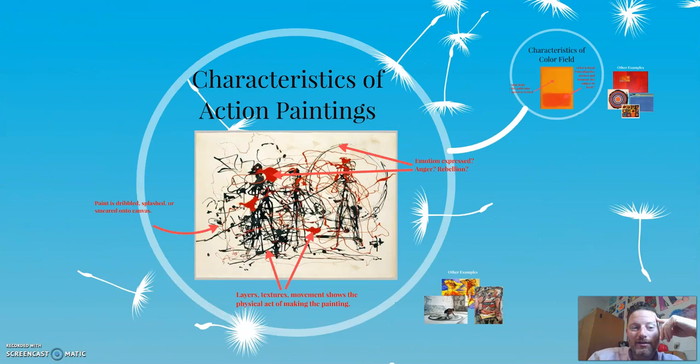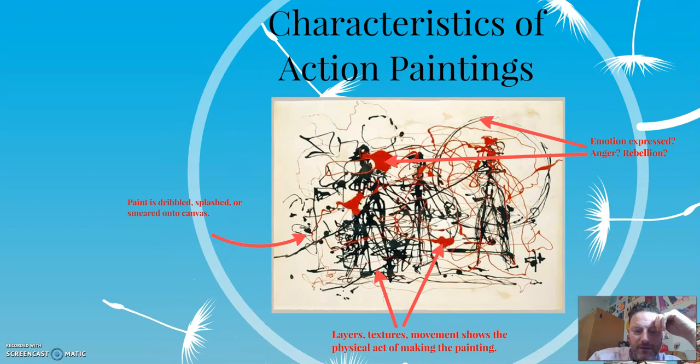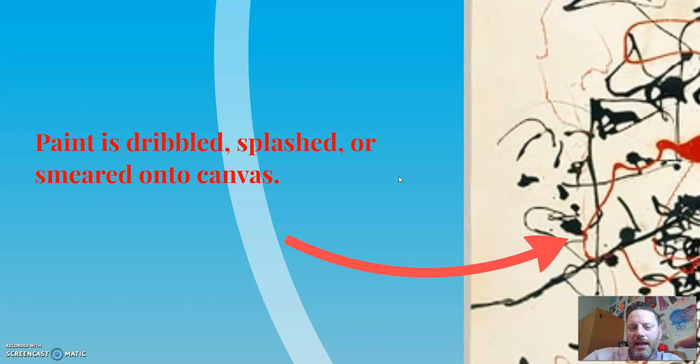A couple of the main types of Abstract Expressionism are action painting and color field. Instead of just pushing on the canvas, Pollock put the canvas on the ground — that gave him all kinds of new possibilities. He began to dribble and splash and smear the paint on the canvas. That's part of the action painting. You can imagine him walking around the canvas; it's a big canvas, usually fairly large.